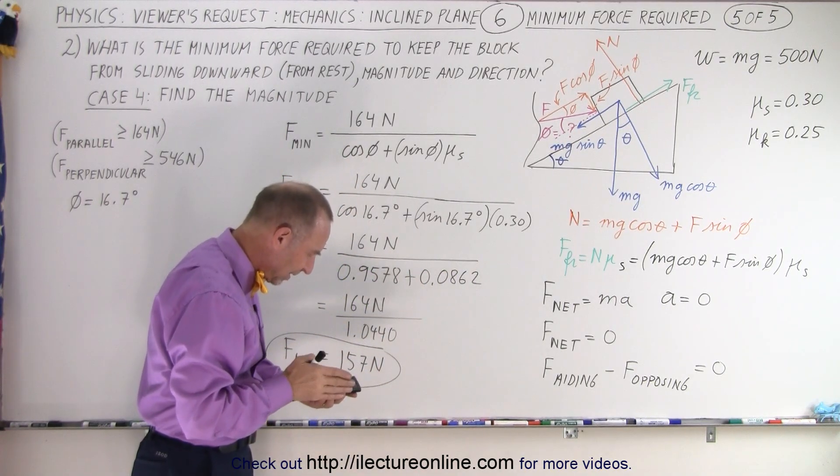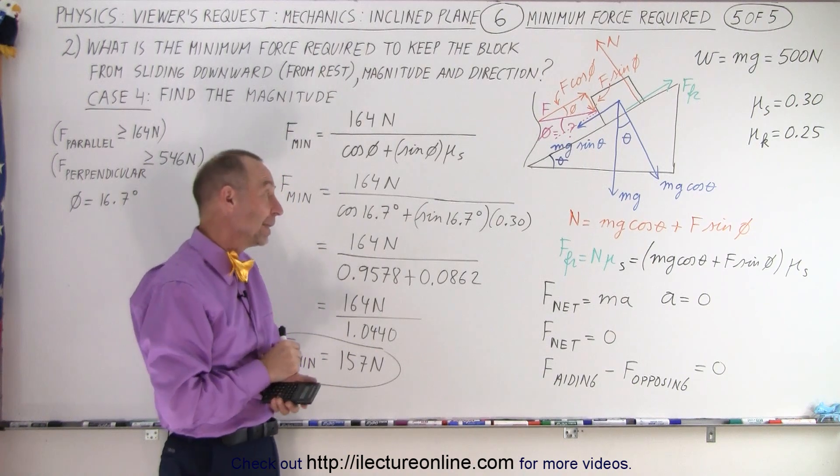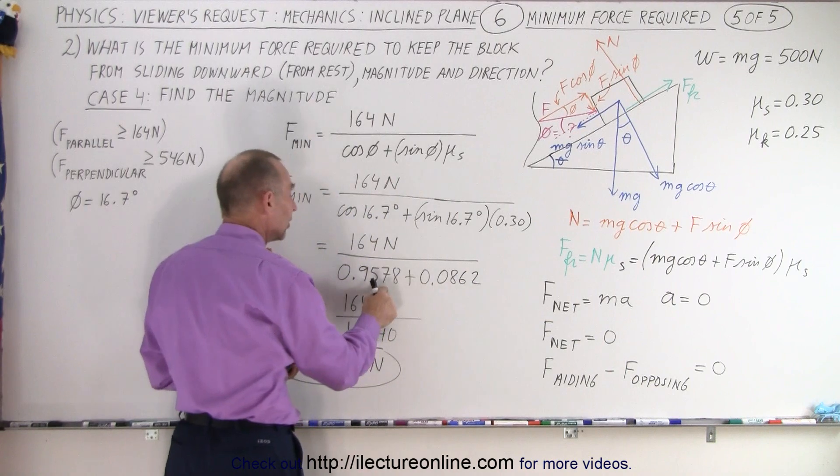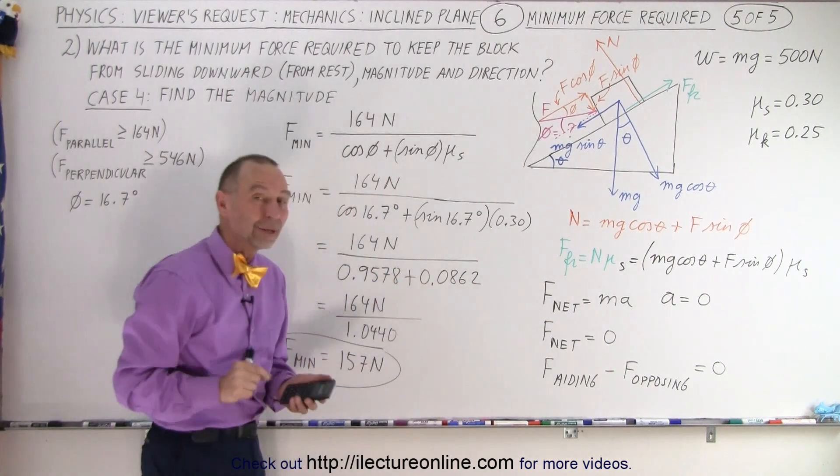that's almost 0.3. And of course, then if you multiply times 0.3, you still get a number big enough that when you add it to this, the denominator is greater than 1.